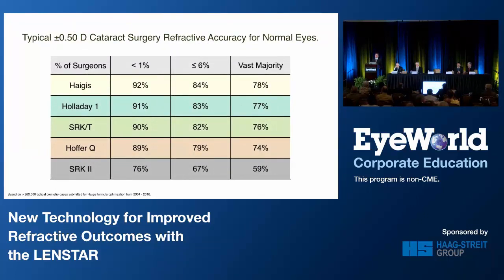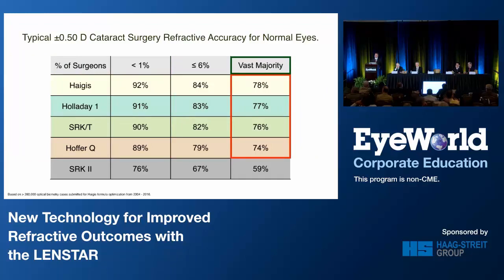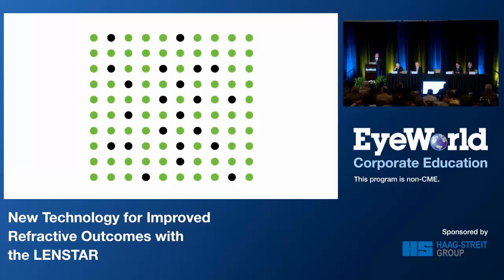I've been involved in the Haggis formula optimization for more than a decade, and this is a summary of what we've found over the last 260,000 cases that we've optimized. Although we all think we're really good, it's really less than 1% of surgeons who are in the low 90s for half-diopter accuracy. The second tier is 6% of surgeons at about 84%, but the vast majority of surgeons, if you track your outcomes, are somewhere between 74 and 80%. That's after removal of obvious outliers and optimization of lens constants. So we may not be quite as good as we all think we are.